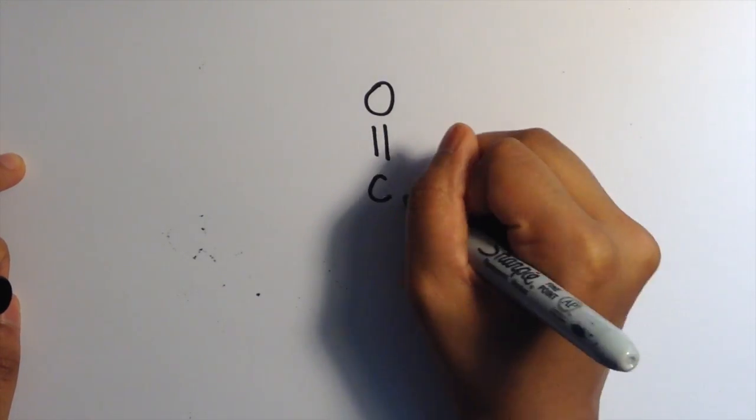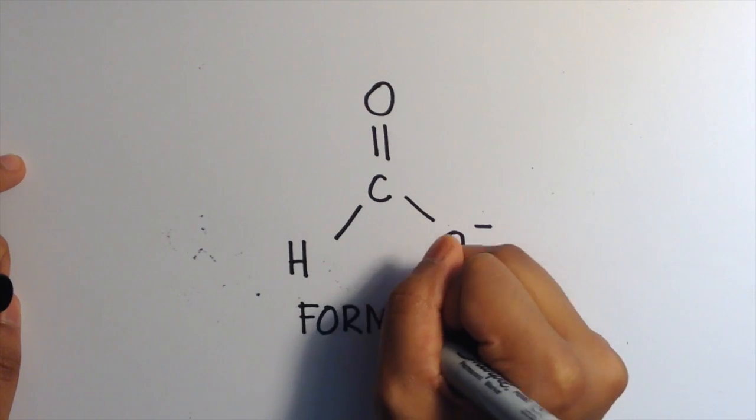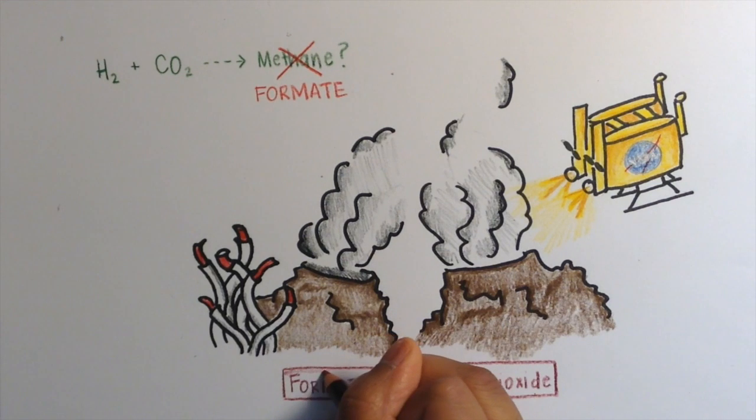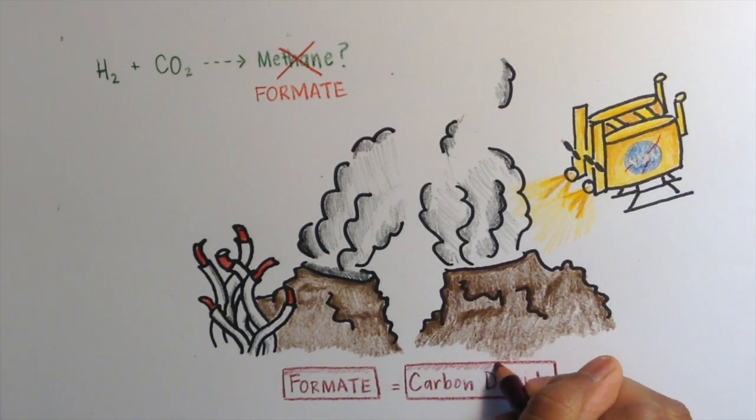Instead, the reaction of hydrogen and carbon dioxide produced a chemical compound called formate. Scientists found that at the vent sites, the amount of formate created matched the amount of carbon dioxide exactly. The amount of formate also matched the amount that was predicted by previous models.